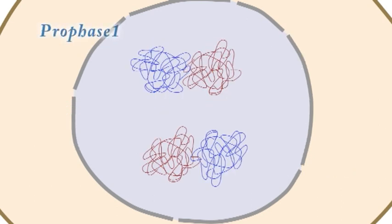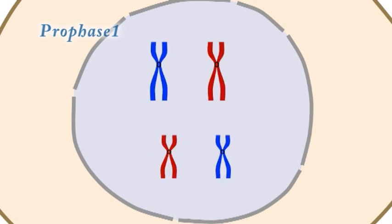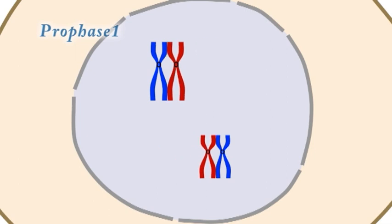During prophase 1, the chromosomes condense and become visible under a light microscope. Homologous chromosomes pair and DNA from non-sister chromatids can cross over between chromosomes at points of connection called chiasmata.